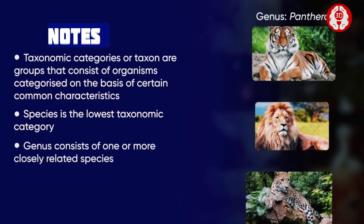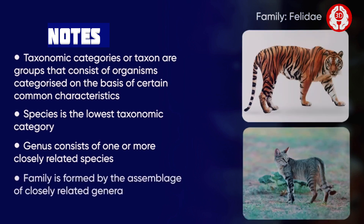Genus consists of one or more species that have a number of common features. Family is formed by the assemblage of closely related genera. Each family exhibits certain definite characteristics.